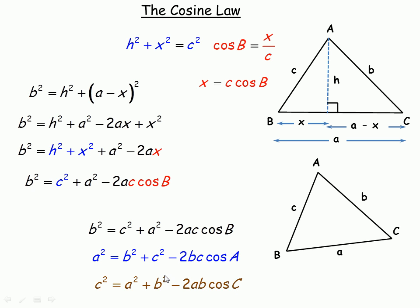Notice that this actually looks quite a bit like Pythagoras' theorem. The cosine law really is Pythagoras' theorem with a correction term — the minus 2ab cos C part accounts for the fact that it's no longer a right triangle. If angle C were 90 degrees, cos 90 equals zero, that term disappears, and you get the plain old Pythagorean theorem.